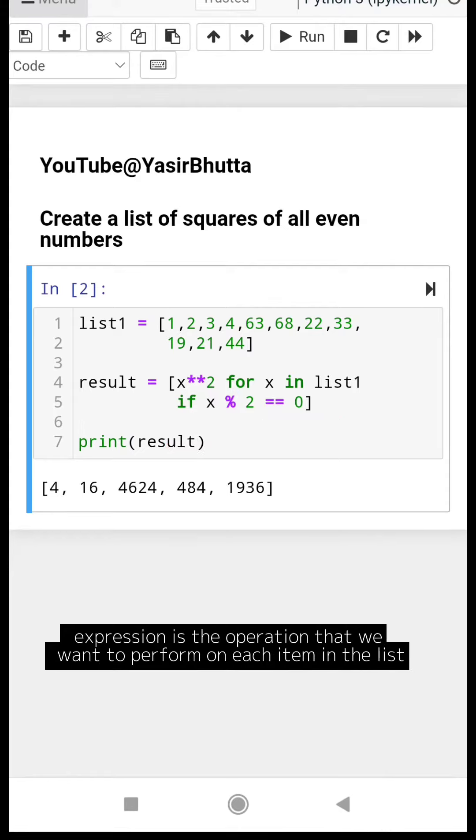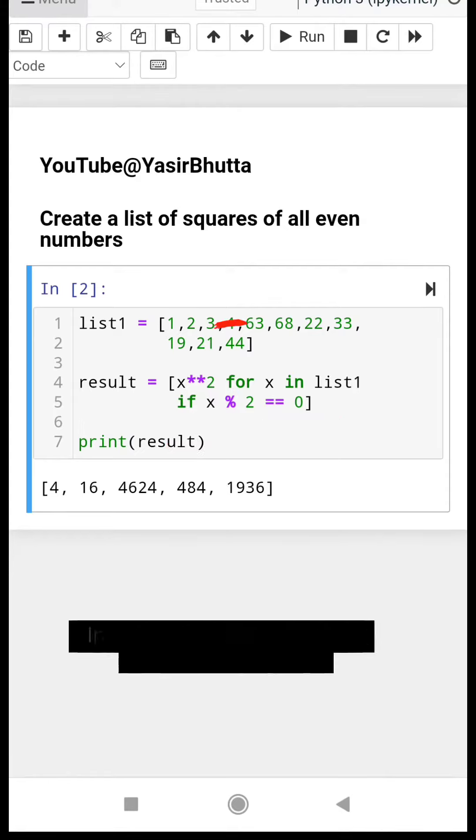The expression is the operation that we want to perform on each item in the list. In this case, it is x**2 which squares the number.